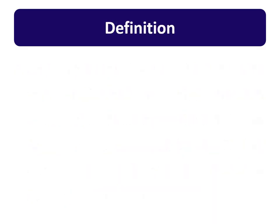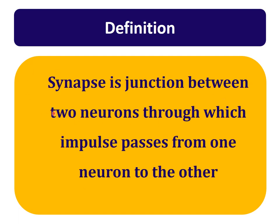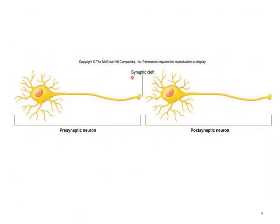Coming to the definition: a synapse is a junction between two neurons through which an impulse passes from one neuron to the other. Always remember: in the first neuron there is always an axon that makes the synapse or junction with the next neuron — maybe with its dendrites, maybe with its axon, maybe with its cell body. These two neurons form a junction, and that junction is called the synapse.